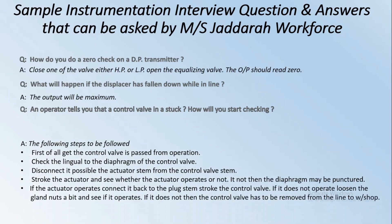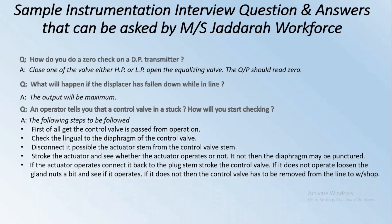Next: An operator tells you that a control valve is stuck — how will you start checking? First, get the control valve passed from operations. Check the signal going to the diaphragm of the control valve. Disconnect if possible the actuator stem from the control valve stem and stroke the actuator to see whether it operates. If not, the diaphragm may be punctured. If the actuator operates, reconnect it to the plug stem and stroke the control valve.